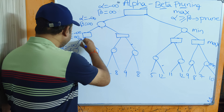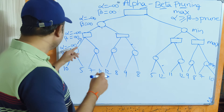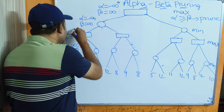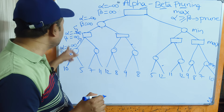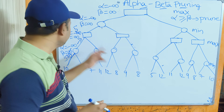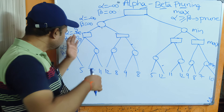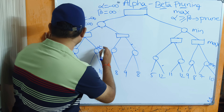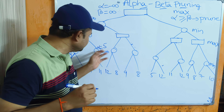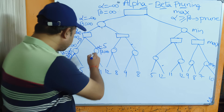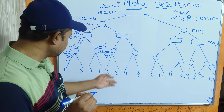Now pass this information to the parent, which is used by the max player. Max player uses only the alpha value, so we store the value 5 in alpha. Out of minus infinity and 5, the maximum value is 5, so alpha becomes 5. Now traverse the right path, passing alpha = 5 and beta = infinity. This node is used by the min player. The left child gives value 7 (smallest of infinity and 7), so replace beta with 7. The right child gives 11; out of 7 and 11, the smallest is 7, so beta stays 7.